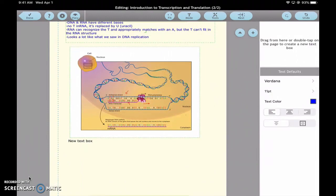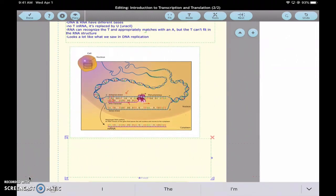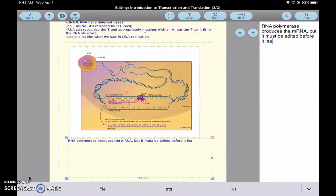So something else that you see at the bottom of that picture is that there's something called messenger RNA. It's an RNA version. It's got to get edited. The RNA polymerase produces the mRNA, but it must be edited before it leaves the nucleus.